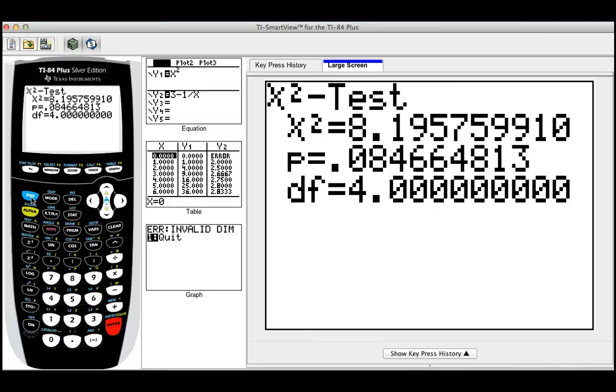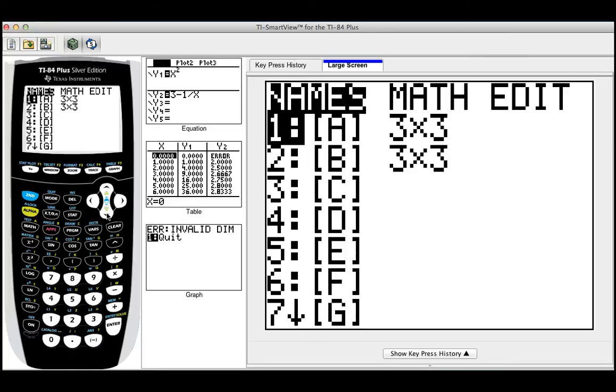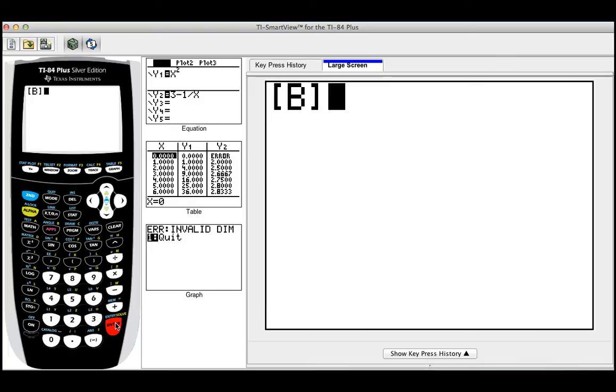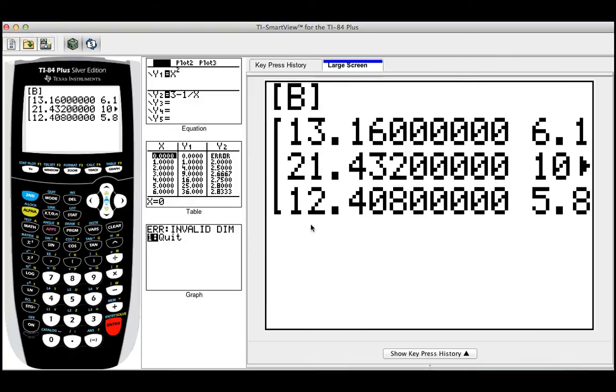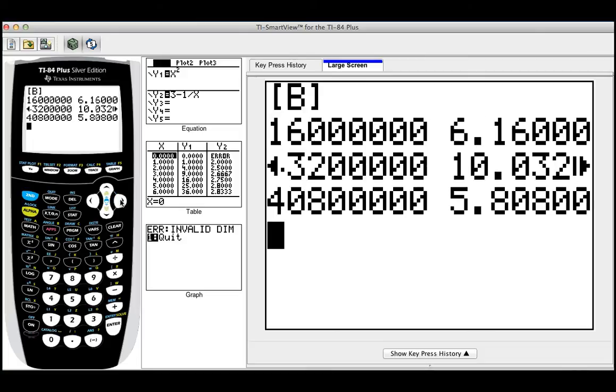Now, let's say that you want to figure out your expected values. So you go to second quit, and you go again to your matrix by doing second matrix, then click on B, and then enter. Click enter again, and look at this. This is the matrix that shows all the expected values.